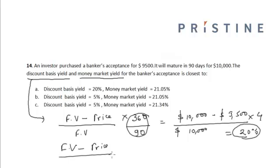See, we are using price in the denominator, whereas we use the face value in the denominator in case of discount basis yield. So in case of money market yield, we are using price in the denominator.